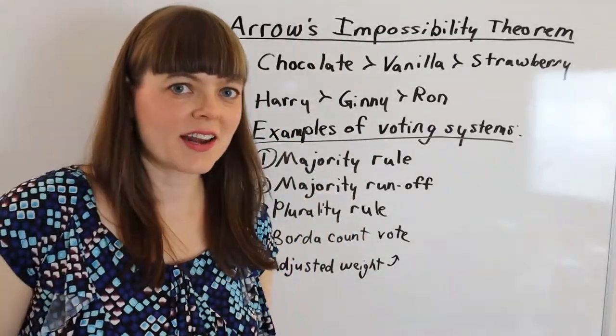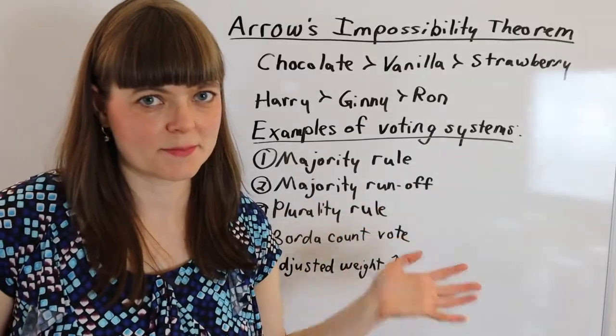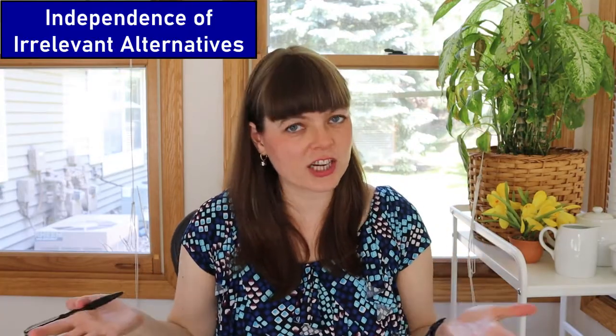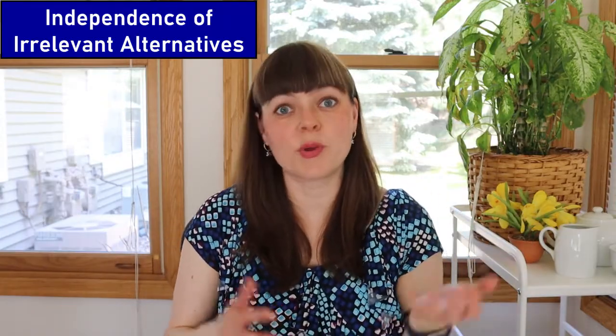There are lots of different ways of aggregating preferences, and all of those are voting systems. Arrow's impossibility theorem looks at four different characteristics of a voting system and proves mathematically that you can't have all four at once. First, there's independence of irrelevant alternatives. This property means that you can't change the outcome of a vote by adding some candidate or option that really was never a contender in the first place.